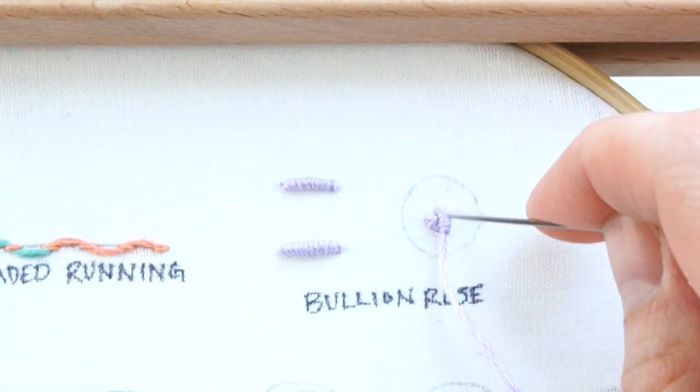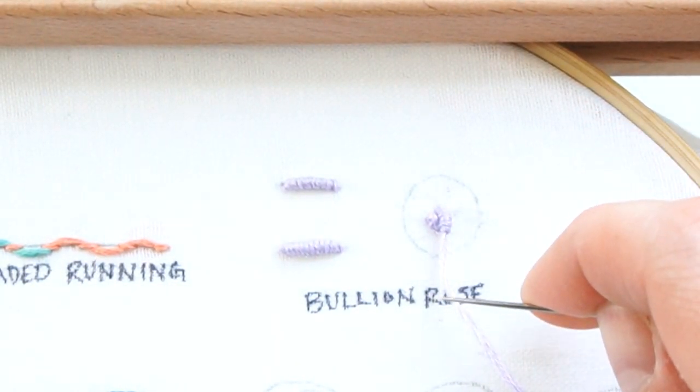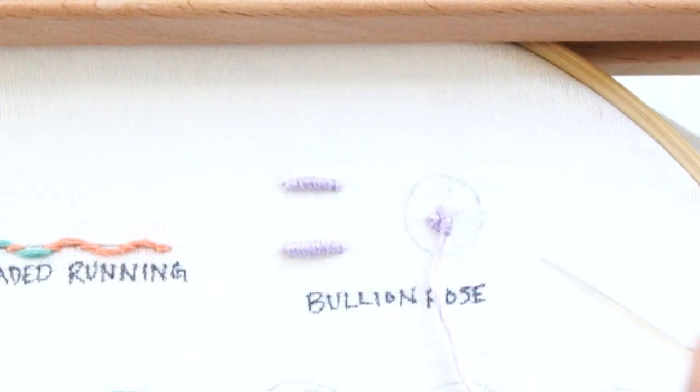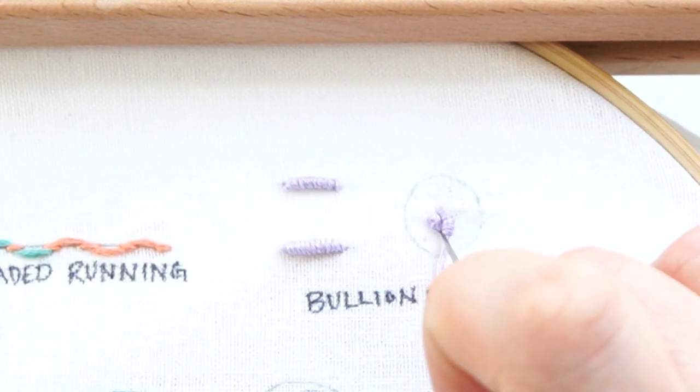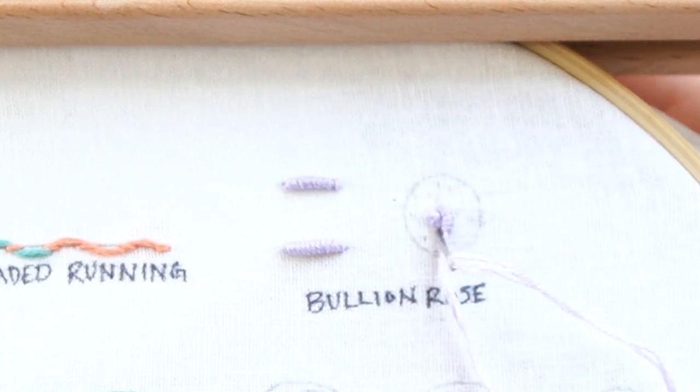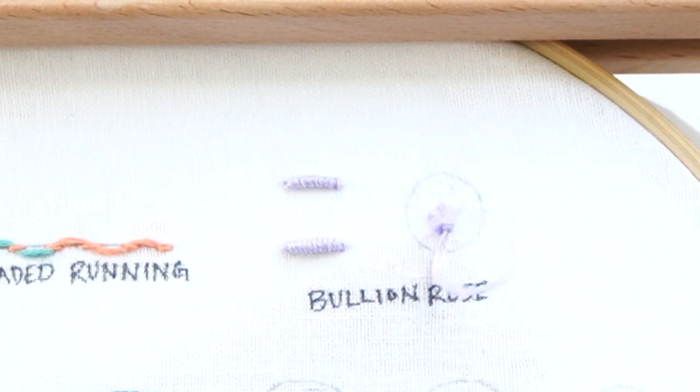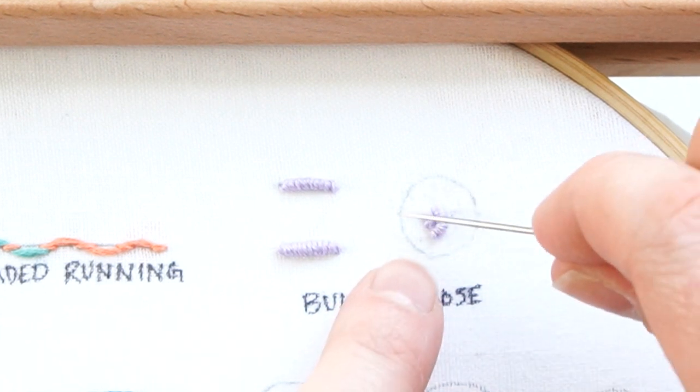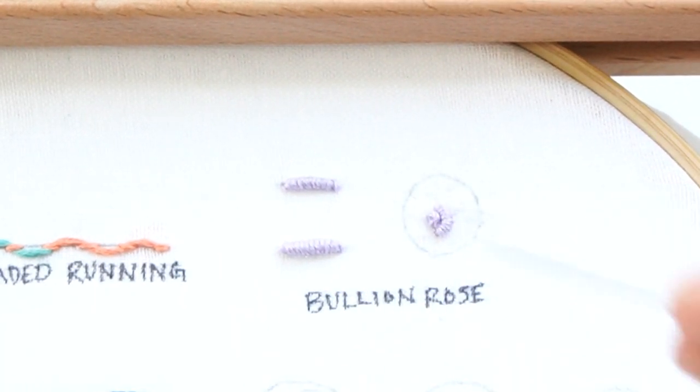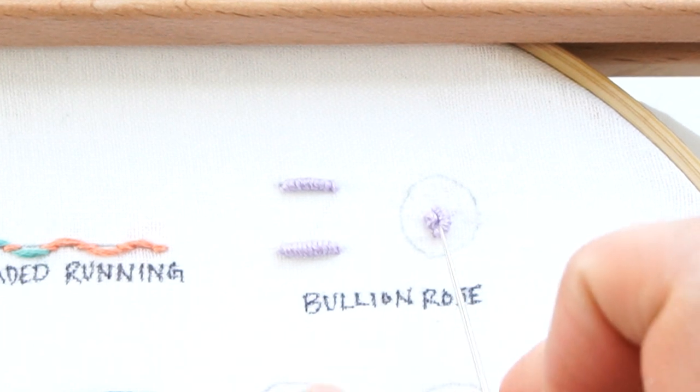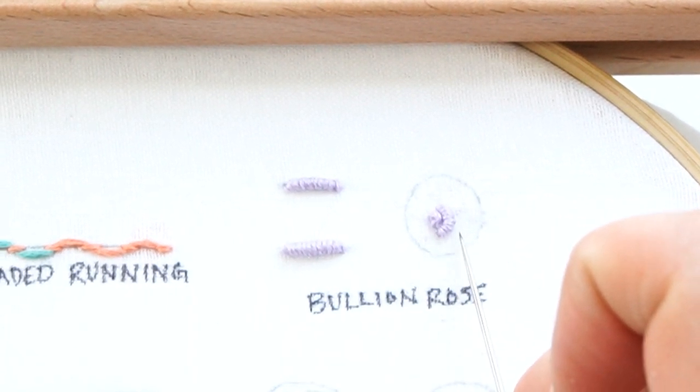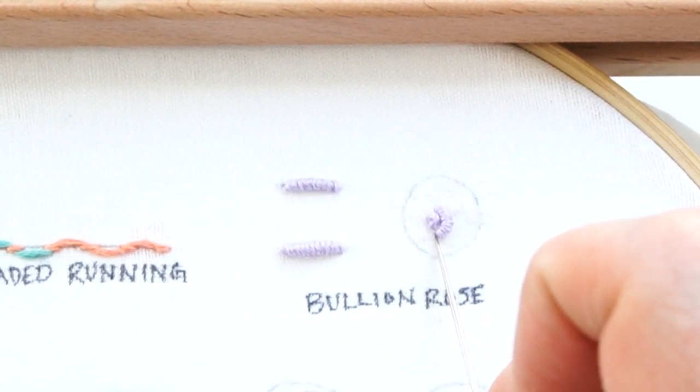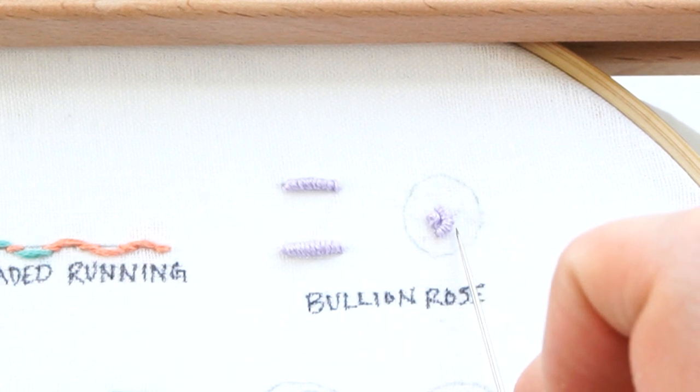Take your needle back down at the end of it. Now we want to do a pinwheel pattern around that center French knot. Rather than start another petal right next to the first one, start it near the end of the first one, just to the outside.